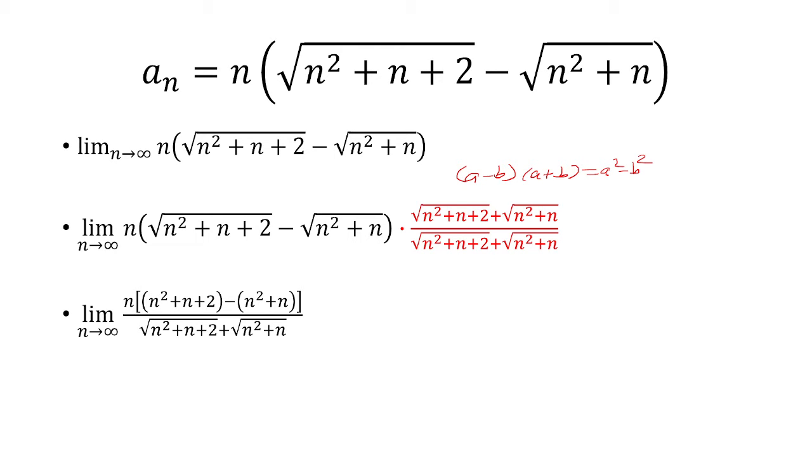Now it's important to put a parentheses around what's inside the square root, because we're going to be distributing the minus sign. Okay, so we have n squared minus n squared. Those are going to cancel, and then n minus n also cancels. So the only thing that's inside the parentheses is just 2. You're going to multiply that by n to get 2n.